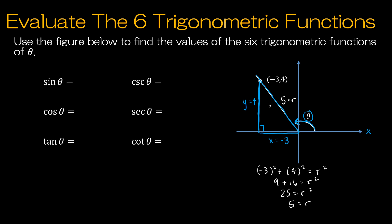From here it's easy to compute all six trigonometric functions. Sine of theta is y divided by r, or 4/5. Cosecant is the reciprocal, 5/4. Cosine is x divided by r, or -3/5. Secant is -5/3. Tangent theta is y over x, which is -4/3. And cotangent is just the reciprocal of tangent, x divided by y.